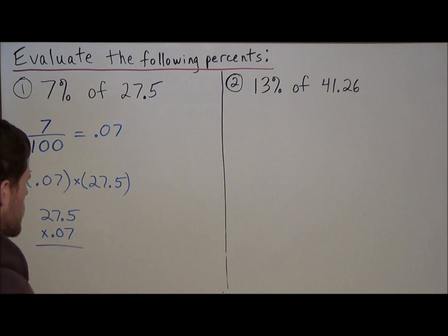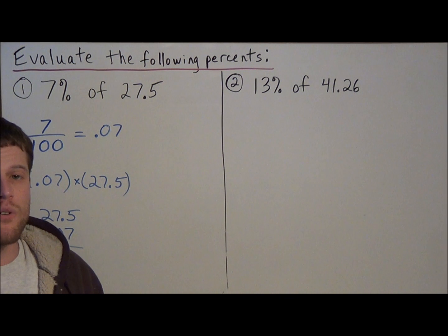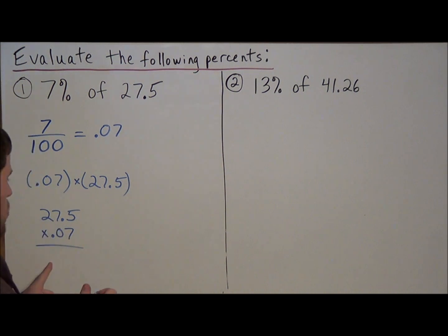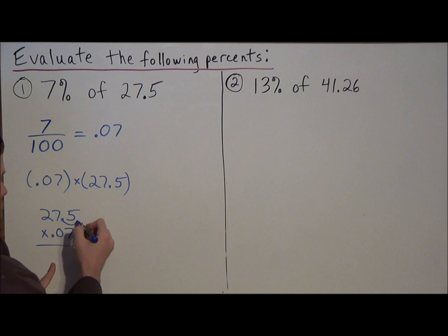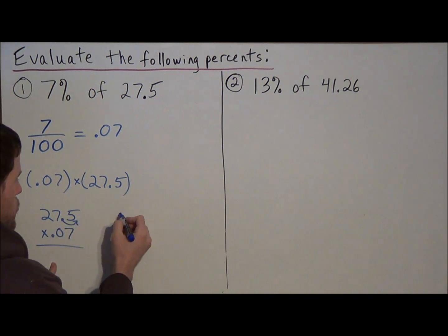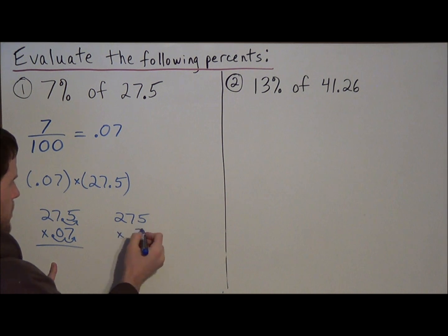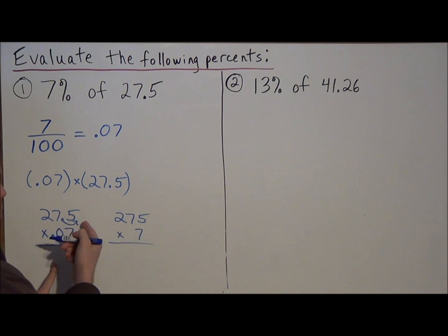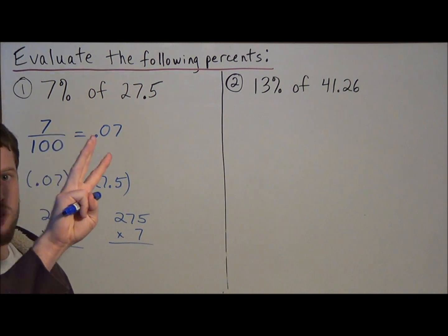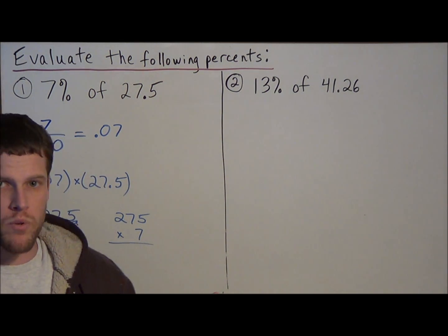But when we're multiplying decimals, to make this problem easier, we want to turn this into a problem with all whole numbers. To turn the top number into a whole number, we would need to move the decimal one place to the right, and that would transform that number into 275. For the bottom number, .07, we need to move the decimal two places to the right to turn that number into 7. But we have to remember that we jumped once to the right and two times to the right, a total of three jumps to the right, so we're going to have to pay that back when we're done.